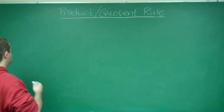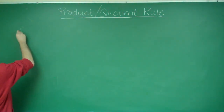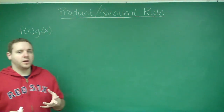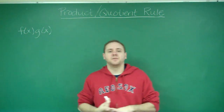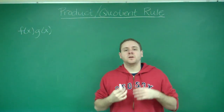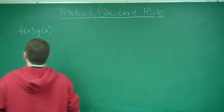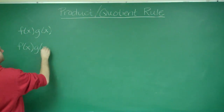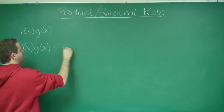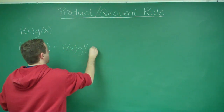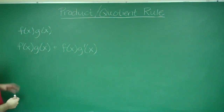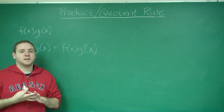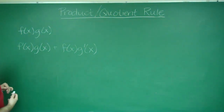First, let's start with the product rule. The product rule states that if you have any function that can be written as the product of two functions — say f(x) and g(x) — when you take the derivative, you get f'(x) times g(x) plus f(x) times g'(x). You can remember this as the derivative of the first times the second, plus the second times the derivative of the first.